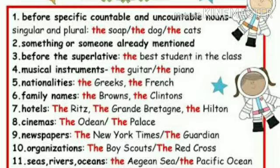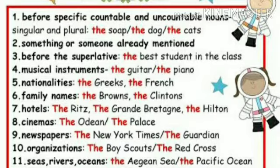Number four: musical instruments — the guitar, the piano, the tabla, whatever. Number five: nationalities — the Greeks, the French.